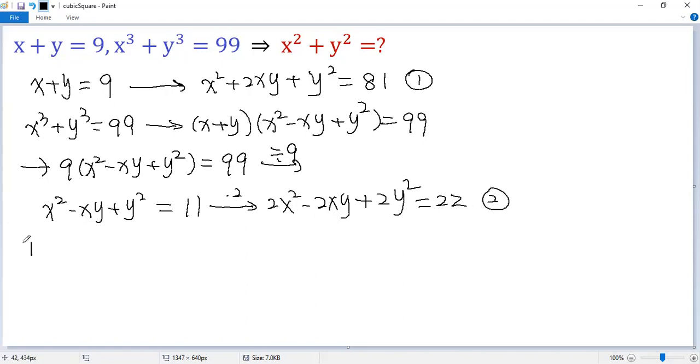Now equation 1 plus equation 2. We get x squared plus 2x squared, so 3x squared. 2xy minus 2xy cancels. Y squared plus 2y squared gives 3y squared. The right side, 81 plus 22, equals 103.